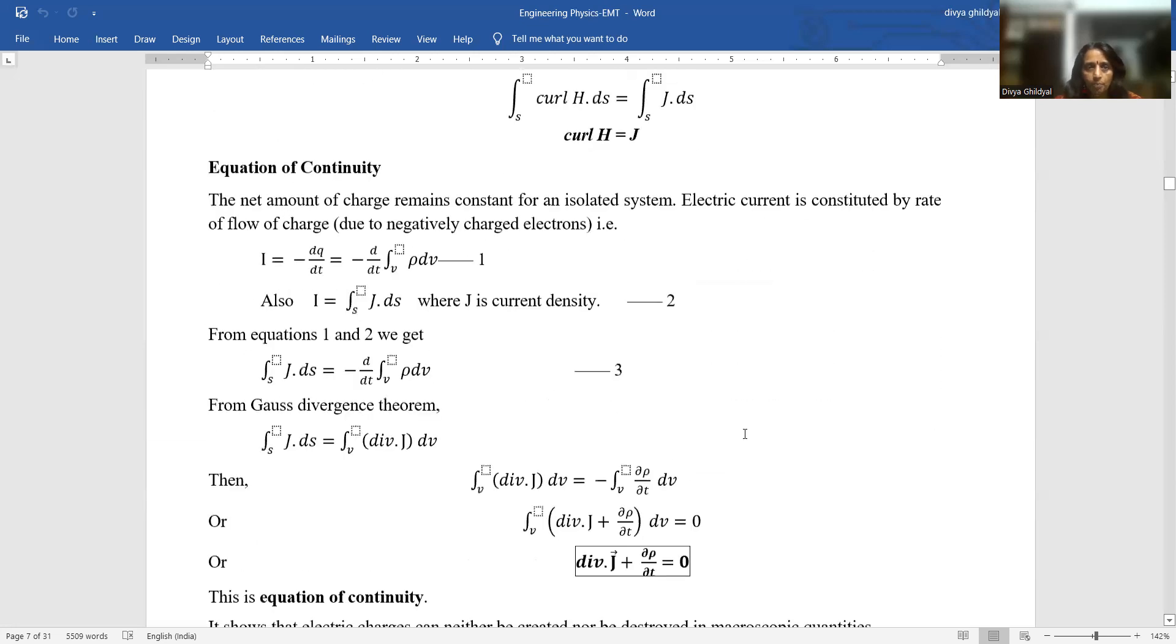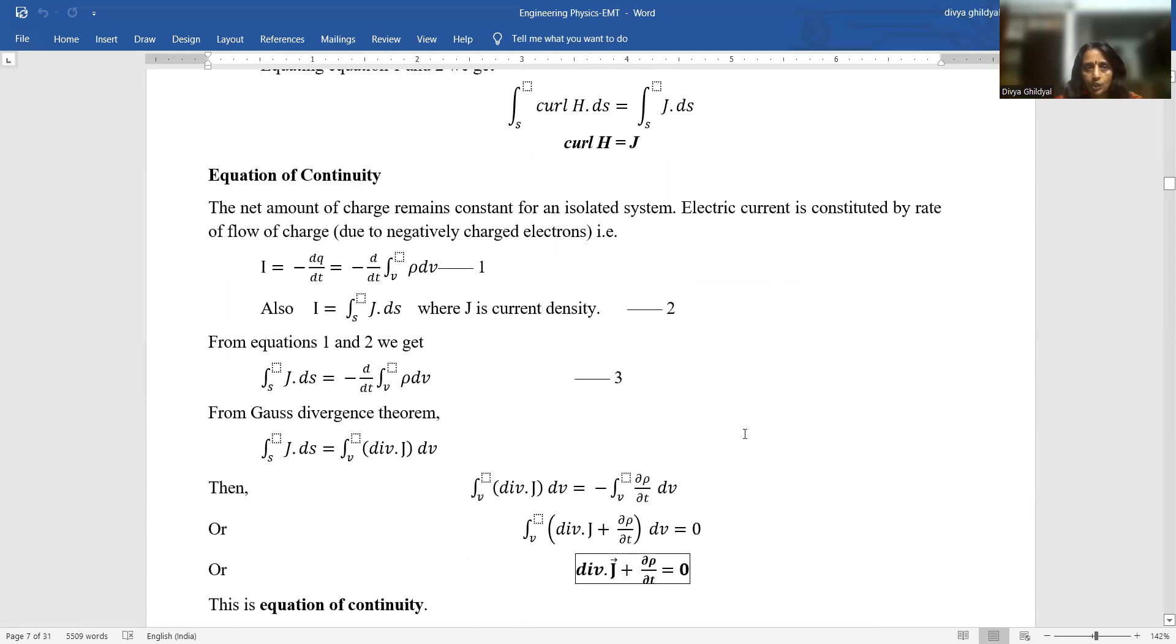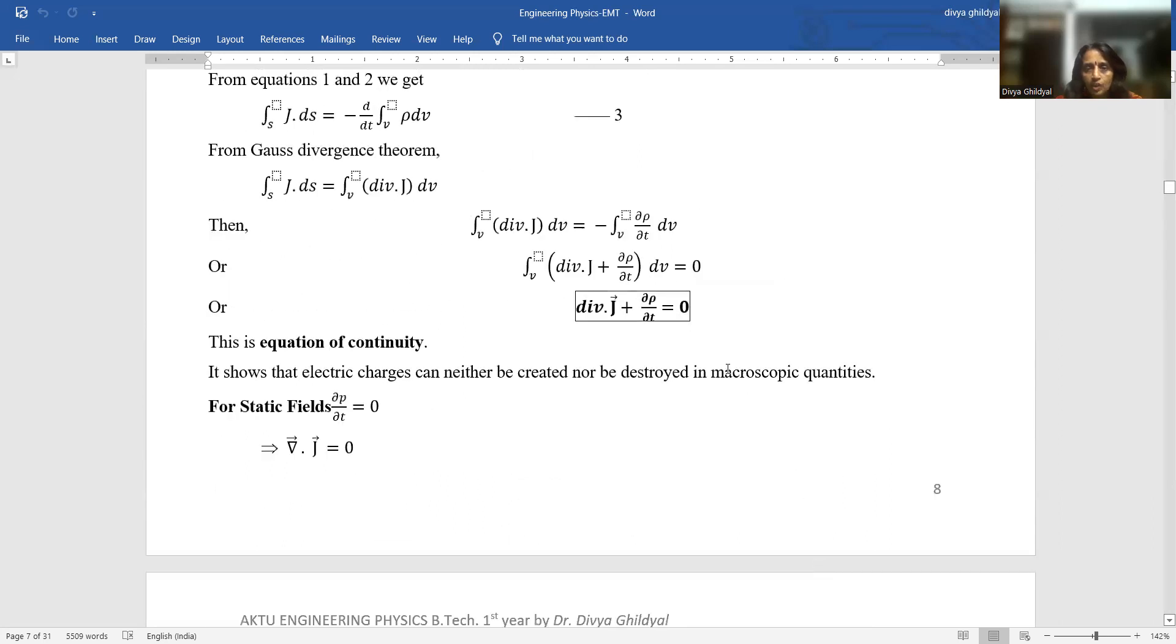Now in your AKTU paper, section B, 2-mark question is asked: write the equation of continuity. So for writing that, you do not need to put in all these derivation steps. You just straight away write the equation of continuity explaining the meaning of the symbols used here - like J is current density, rho the charge density, T the time, and explain it for static field. This way, 2-mark section B question, you will get full 2 on 2 here.